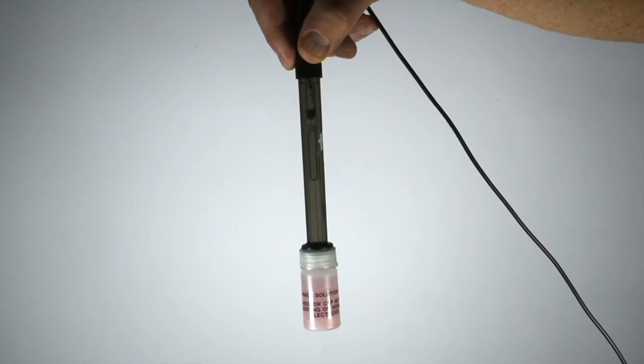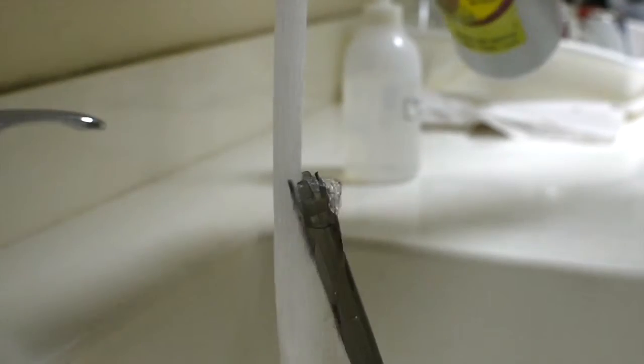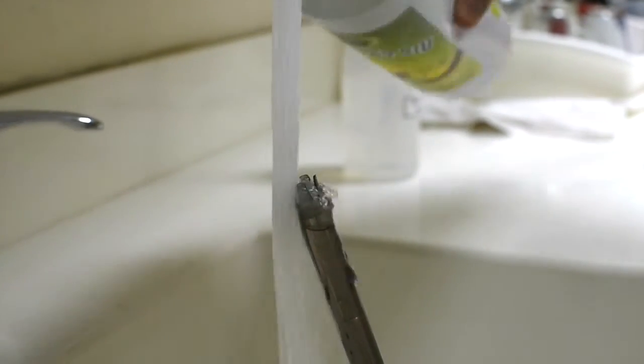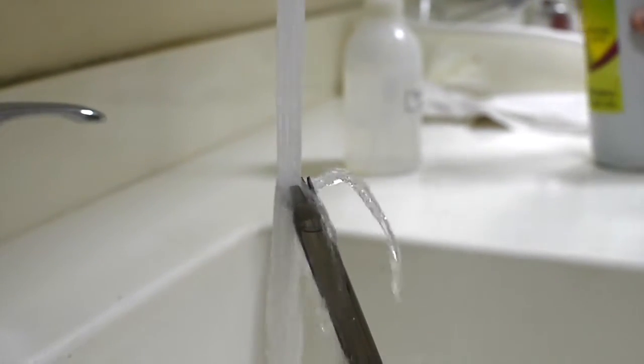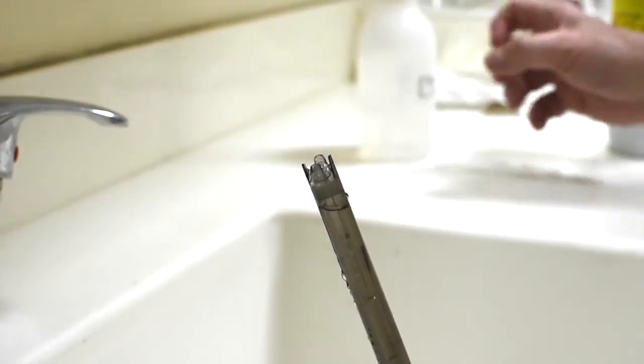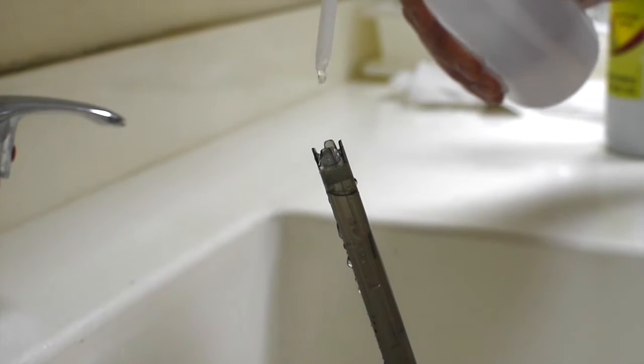Always store the electrode in its protective cap. If your electrode is covered with grease or oil, you can wash it with warm tap water and dishwashing soap. Then rinse with distilled water.